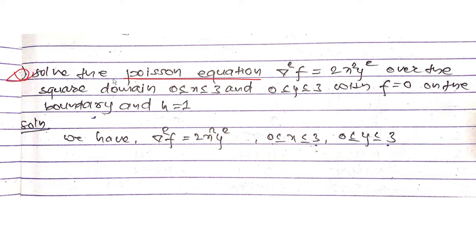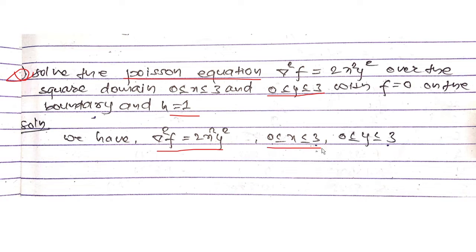Here we have the equation: solve Poisson's equation del squared f equals 2x squared y squared, over the square domain 0 ≤ x ≤ 3 and 0 ≤ y ≤ 3, with function f equal to 0 on the boundary and spacing s equals 1.